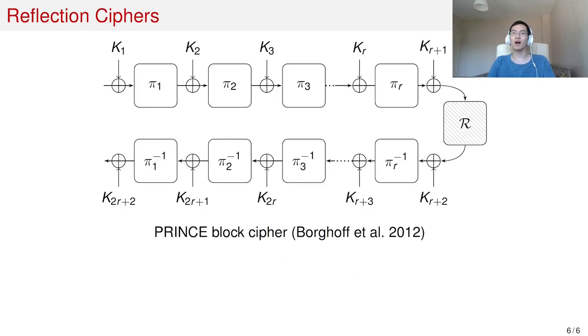The answer is given by Borghoff et al. in 2012, where they introduced the PRINCE reflection cipher. The cipher is based on the following structure, which is shown on the slide. We call this design structure the key-alternating reflection cipher structure.